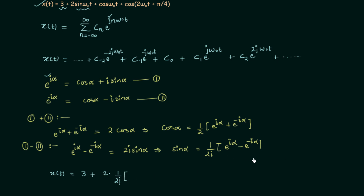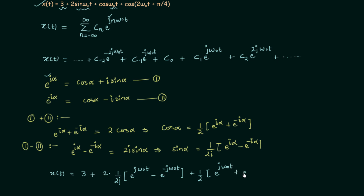Now we move to the third term, which contains cos omega0t. Here omega0t is the alpha, so we use the cosine formula and write 1 divided by 2 inside the bracket e raised to power j omega0t plus e raised to power minus j omega0t.